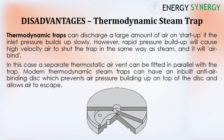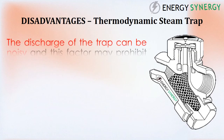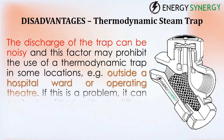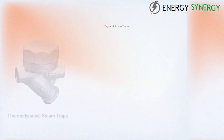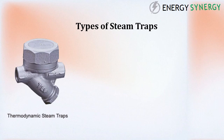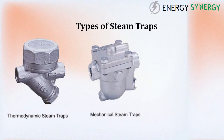Modern thermodynamic steam traps can have an inbuilt anti-air-binding disc which prevents air pressure building up on top of the disc and allows air to escape. Another disadvantage is that the discharge of the trap can be noisy, which may prohibit its use in some locations — for example, outside a hospital ward or operating theater. If this is a problem, it can easily be fitted with a diffuser which considerably reduces the discharge noise.